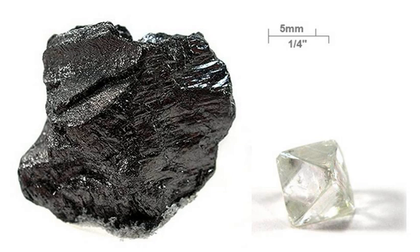Carbon nanotubes are structurally similar to buckyballs, except that each atom is bonded trigonally in a curved sheet that forms a hollow cylinder. Nanobuds were first reported in 2007 and are hybrid bucky-tube–buckyball materials, where buckyballs are covalently bonded to the outer wall of a nanotube, combining the properties of both in a single structure. Carbon nanofoam is a ferromagnetic allotrope discovered in 1997. It consists of a low-density cluster assembly of carbon atoms strung together in a loose three-dimensional web, in which the atoms are bonded trigonally in six- and seven-membered rings. It is among the lightest known solids, with a density of about 2 kg/m³.